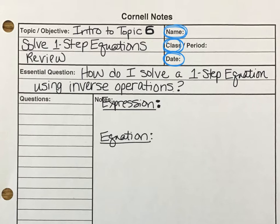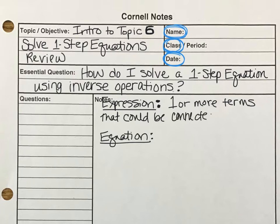Well, let's take a look at that. An expression is one or more terms that could be connected by an operation. An operation means addition, subtraction, multiplication, or division. An equation, however, is a number sentence that shows two expressions are equal.